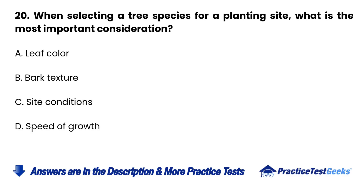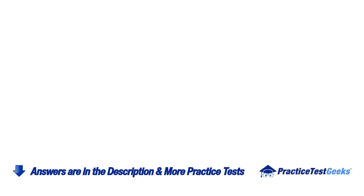Question 20. When selecting a tree species for a planting site, what is the most important consideration? A. Leaf color. B. Bark texture. C. Site conditions. D. Speed of growth.